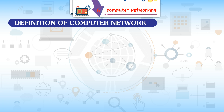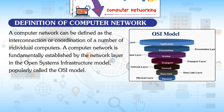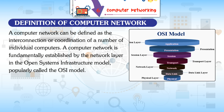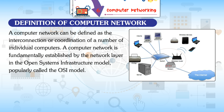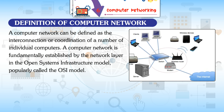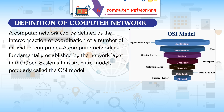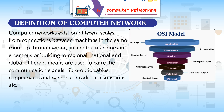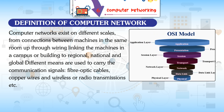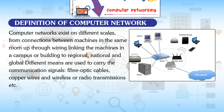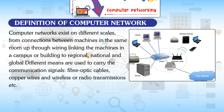A computer network can be defined as the interconnection or coordination of a number of individual computers. A computer network is fundamentally established by the network layer in the Open Systems Infrastructure model, popularly called the OSI model. Computer networks exist on different scales, from connections between machines in the same room up through wiring linking machines in a campus or building, to regional, national, and global networks.